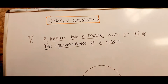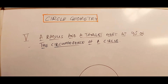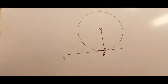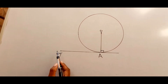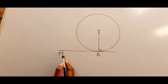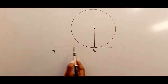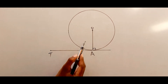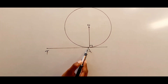A radius and a tangent meet at 90 degrees on the circumference of a circle. Tangent TA is a line that comes in contact with the circumference — it doesn't cut through it, just touches the circumference. The radius goes from the center to the circumference.